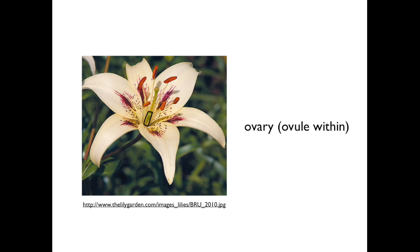I'll now give you a 10-second summary of what we've learned. Each stage in the cycle exists to create something that perpetuates the next stage. The gametophyte creates gametes that fuse to form the seed. The sporophyte grows a plant which can support the sex organs.